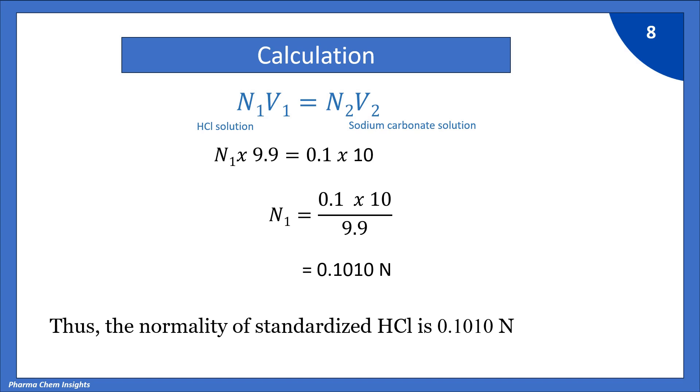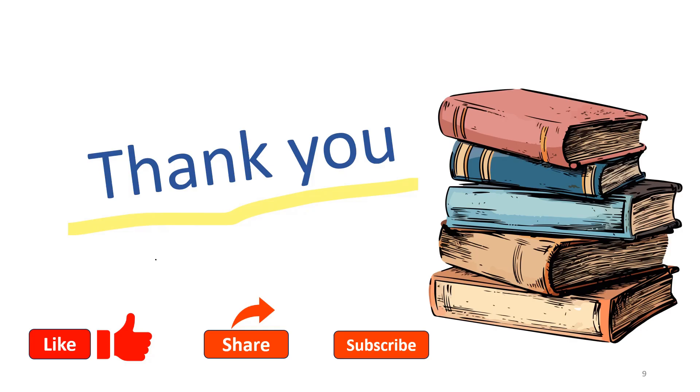And that's it. You have prepared and standardised 0.1 normal HCl. Now you are ready to use it for precise experiments. Don't forget to label your solution with the concentration and preparation date. Thank you very much for watching. If you found this video helpful, hit the like button, share and subscribe. Let us know in the comments what topics you would like us to cover next.